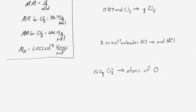Our first example is converting 0.317 moles of chlorine gas, diatomic chlorine, into grams of chlorine. We start with our initial data: 0.317 moles of Cl2. We need a conversion factor that converts from moles to grams, and that's the molar mass, which has units of grams per mole.